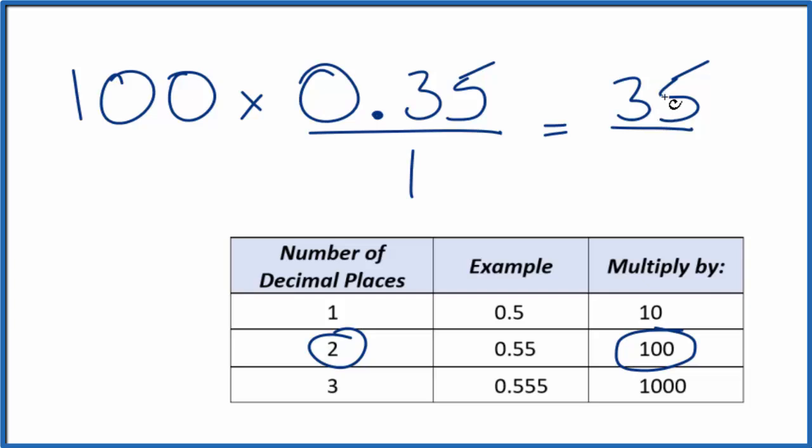So now we have a whole number, but 35, that's not equal to 0.35. What we need to do is also multiply the bottom here by 100. When we do that, 100 times 1 gives us 100. So now we have a whole number here. 100 over 100, if you divide 100 by 100, you get 1. So we're multiplying by 1; we haven't changed the value, just the way it's written.